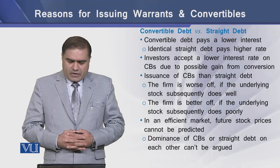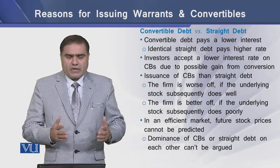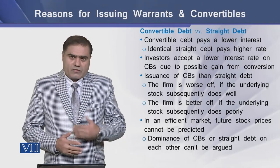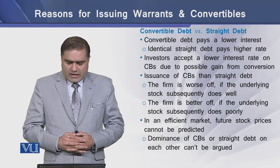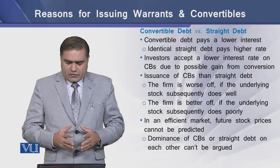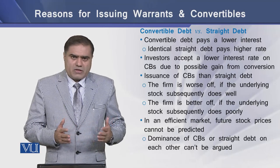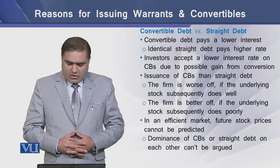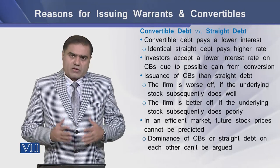If the firm issues convertible debt rather than straight debt, the firm is worse off if the underlying stock performs well, and better off if the underlying stock subsequently performs poorly. In an efficient market, future stock prices cannot be determined or estimated. Therefore, the dominance of convertible bonds or straight debt on each other cannot be argued.